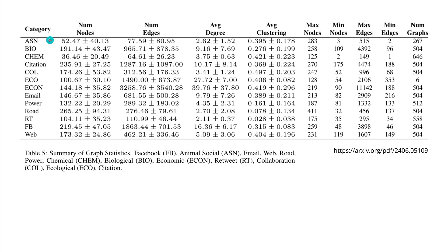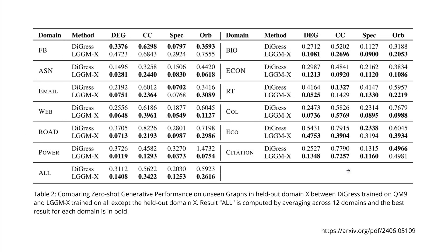If you want to see the 5000 graphs across the 13 domains, here you have the median number of nodes, number of edges, and all the characteristics of those networks. The domains include Facebook, Animal Society, Email, Web, Road, Power, Chemical, Biological, Economic, Retreat data, Collaboration data, Ecological data, and Citation data - absolutely fantastic.